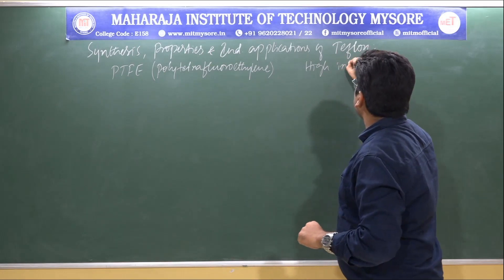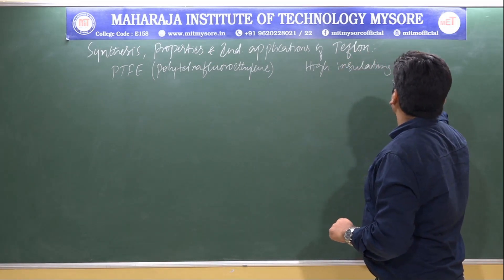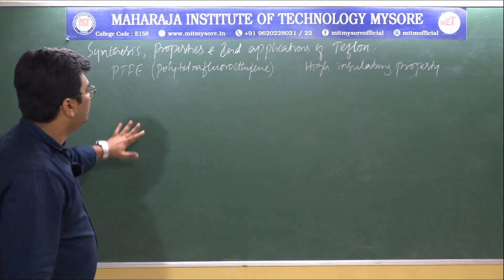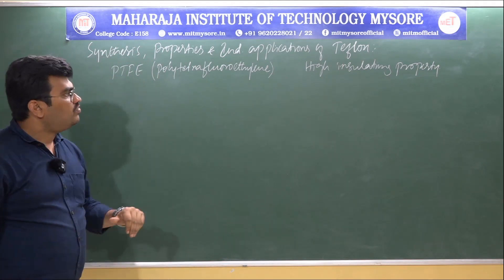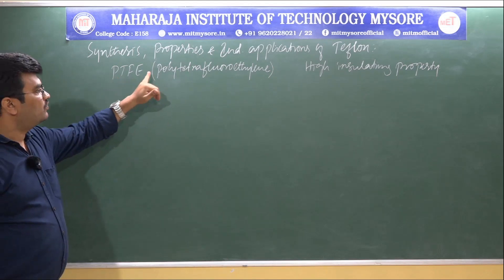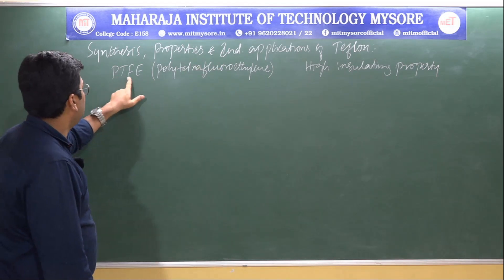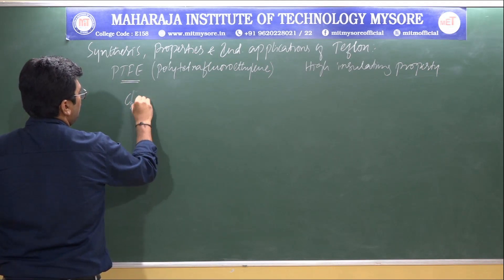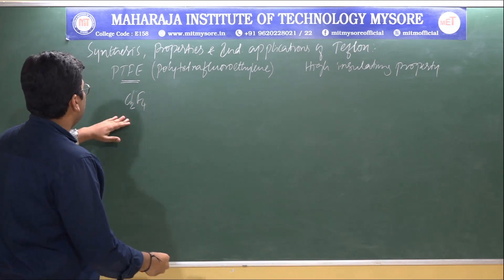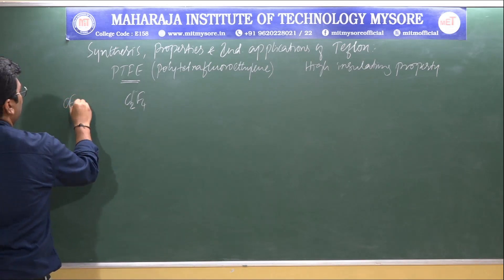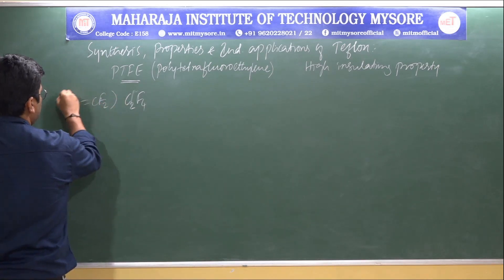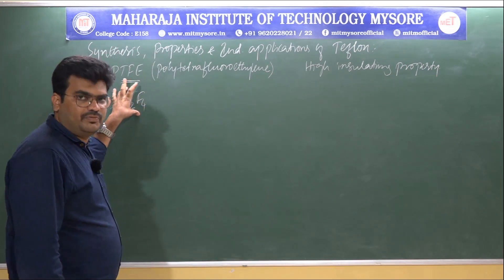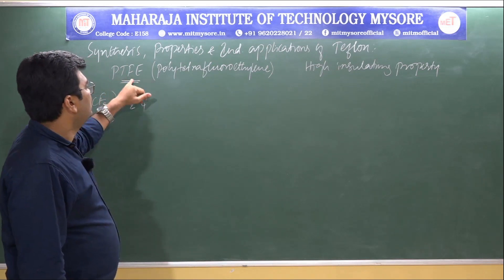The monomer used for the synthesis of polytetrafluoroethylene (PTFE/Teflon) is tetrafluoroethylene, with the structure C2F4, also written as CF2=CF2. Tetrafluoroethylene can be prepared by treating chloroform with hydrogen fluoride, followed by dechlorination of the resulting product by heating.